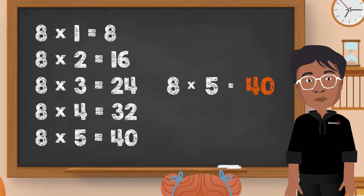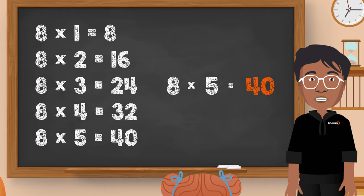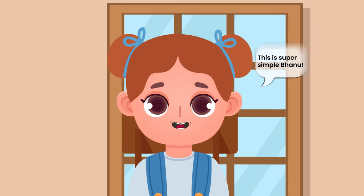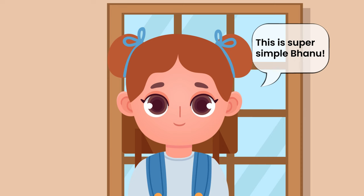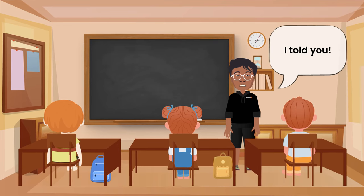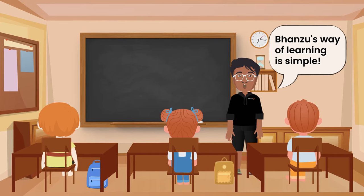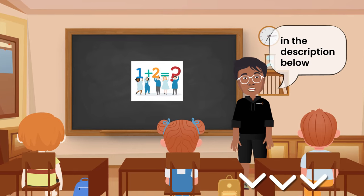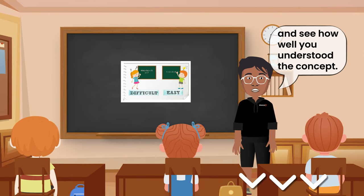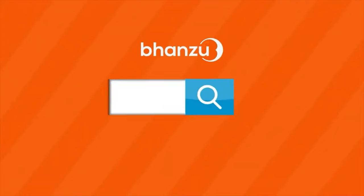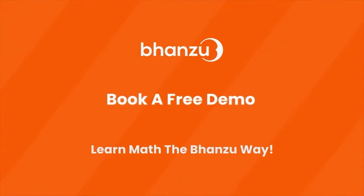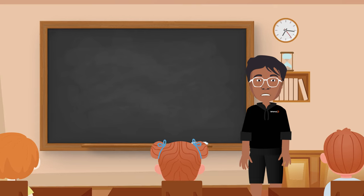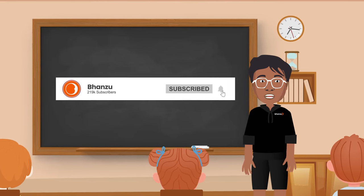Yes, John, you're right. Forty and all others in the table of eight will be its multiples. This is super simple, Bhanu. Thank you for the lesson. I told you Bhanzu's way of learning is simple. You all can try the worksheet in the description below and see how well you understood the concept. For more simplified math, book a free demo with Bhanzu. Until then, like, share, and subscribe to the channel and join the Bhanzu revolution.